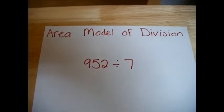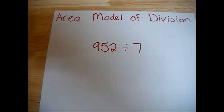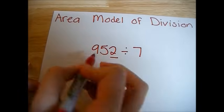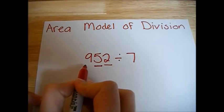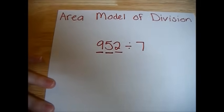Since we're using the area model method, the first thing we have to do is set up our model. The number 952 has three digits: two ones, five tens, and nine hundreds. So we're going to need three boxes.